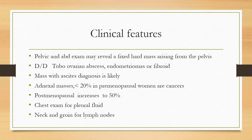On clinical examination, pelvic and abdominal examination may reveal a fixed hard mass arising from the pelvis — at advanced stage; early stage cannot be picked up. Differential diagnosis includes tubo-ovarian abscess, endometriomas, or fibroids. Mass with ascites makes the diagnosis of ovarian cancer likely. If adnexal masses are present in premenopausal women, they are cancers in less than 20% of cases; in postmenopausal women, the chance rises to 50%.